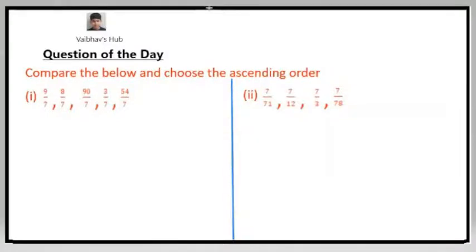Now let us solve them. In the first question, all the denominators are the same. So what do we do when the denominators are the same? Yes, we will compare the value of the numerator. We'll have to arrange them from the smallest to biggest, which is from the smallest numerator to the biggest numerator.